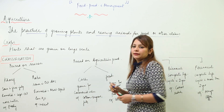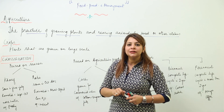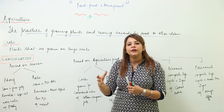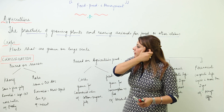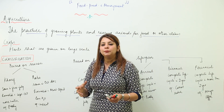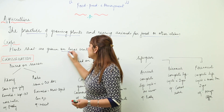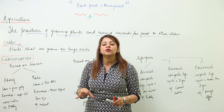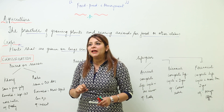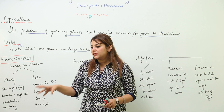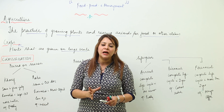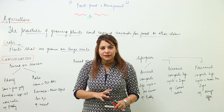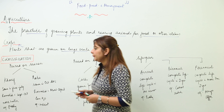In agriculture, we plant crops and rear animals to fulfill our needs. Crops are also plants, but when plants are grown on a large scale they are called crops. For example, if you plant a rose plant in a pot, that is just a plant, but when you are planting plants on a large scale, it is called a crop.